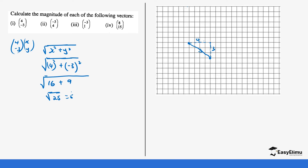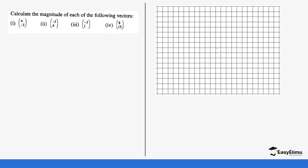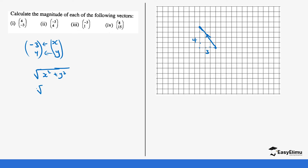Now the second example is vector (-3, 4). It moves three steps in the opposite direction on the x-axis and four steps upwards on the y-axis. The magnitude is √((-3)² + 4²) = √(9 + 16) = √25 = 5.